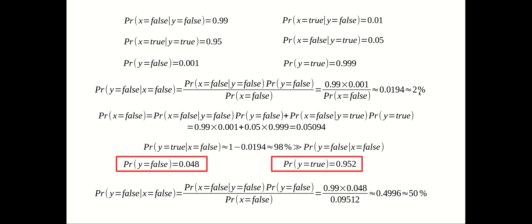If you divide them, you get a very small number: 0.0194, which is about 2% chance. So the posterior for Y=false given the polygraph says the person is lying is very very small — just 2%. Then the posterior probability for Y=true given X=false is about 98%, which is much much bigger. This shows that the polygraph test result saying the person is lying is actually not reliable.